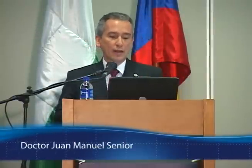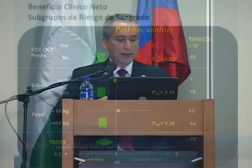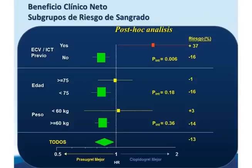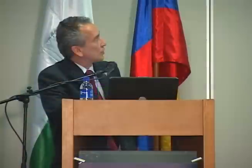Sin embargo, el prasugrel no es para todos. Los pacientes con antecedente de enfermedad cerebrovascular o accidente isquémico transitorio tuvieron un comportamiento casi como factor de riesgo con prasugrel y no deben recibirlo. Tampoco tuvieron beneficio los ancianos ni los pacientes de bajo peso. En resumen: en pacientes ancianos, de bajo peso o con historia de enfermedad cerebrovascular o AIT, no se debe utilizar prasugrel.